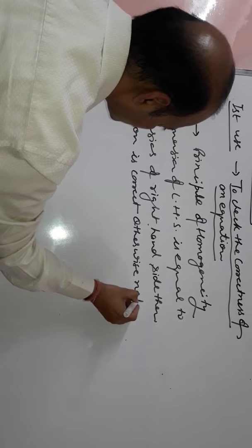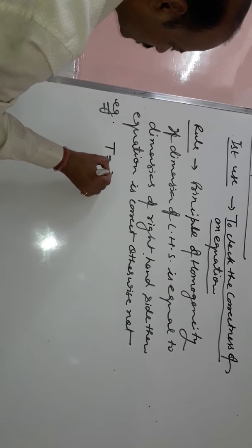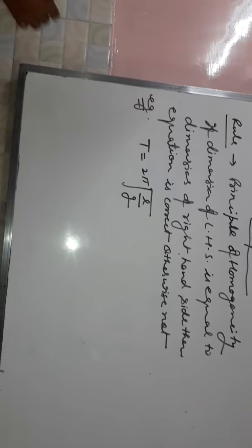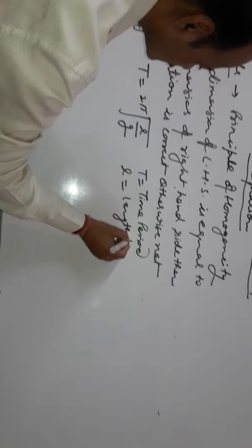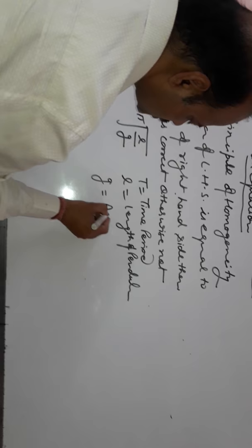For example, T equal to 2π square root L upon G, where T is time period, L is length of pendulum, and G is acceleration due to gravity.